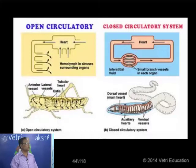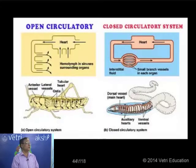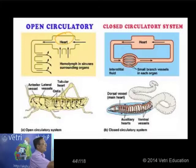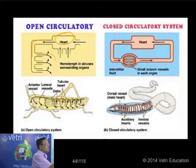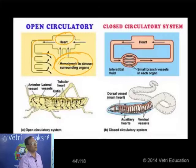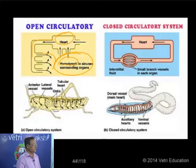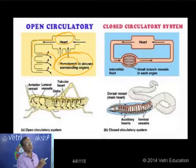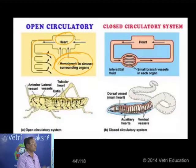Here is a diagrammatic representation of the open circulatory system using the grasshopper as an example. The heart pumps blood through poorly developed blood vessels reaching the open spaces. In arthropods, the blood is mostly colorless and called hemolymph. The hemolymph in the sinuses surrounds the organs, and gas exchange and material exchange take place between the organs and the blood. From the open spaces, the blood returns to the heart through small undeveloped blood vessels.